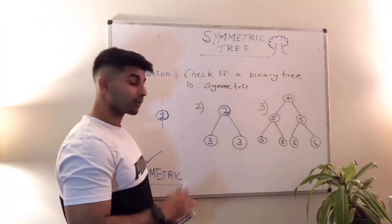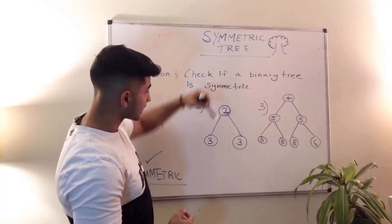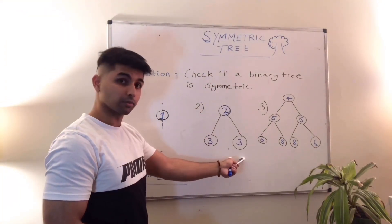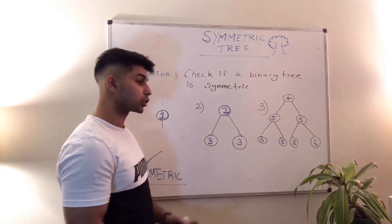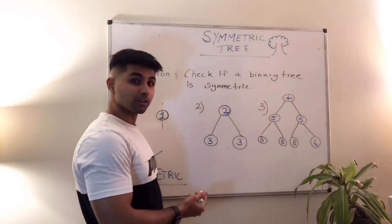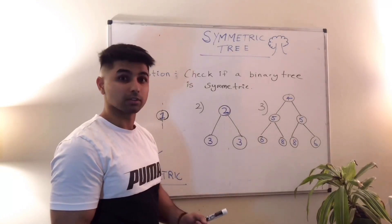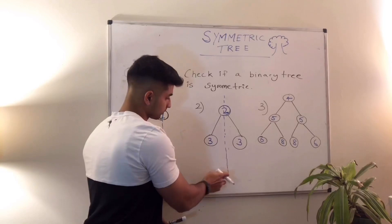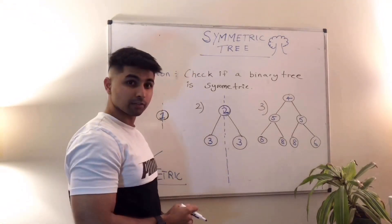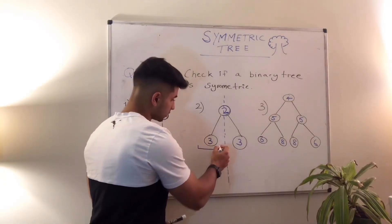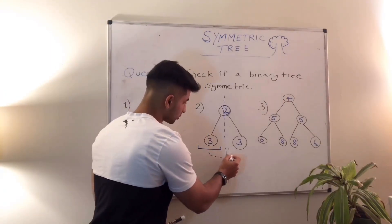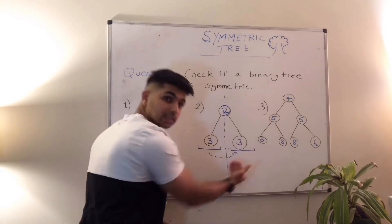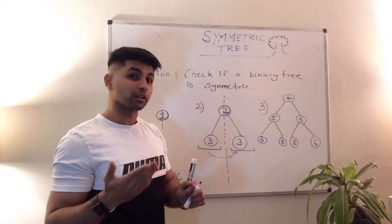For example number two, step one is to take a mental note of the tree. Two is our root node. The root node has a left child of three and a right child of three. Step two is to check whether it's symmetric by drawing a line through the middle of that tree — the middle being the root node itself. You then take the left child and fold it onto the right child. If they fold and match, they are considered to be symmetric.